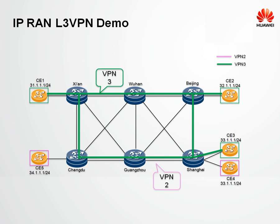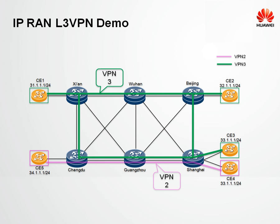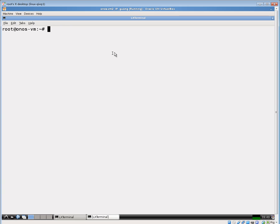We will use L3 VPN as a service and demonstrate how we could deploy this service on the network. In order to do that, we will create a simple network, connect a few CE devices or access devices, and create service on top of that.